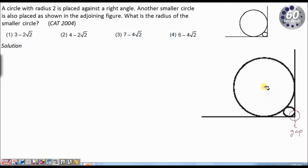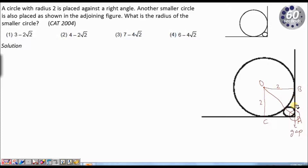Say the center of the bigger circle is O. This radius is 2, and this other radius is also 2. If this point of intersection is A and the center of the circle is O, then the line OA will act as the hypotenuse for triangle ABO. OB is 2, and BA which equals OC will also be 2. Using the Pythagorean theorem, the length of OA will be 2√2.